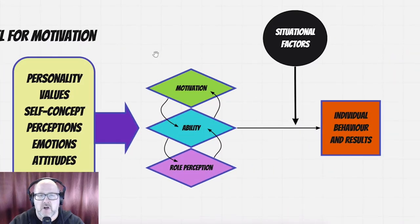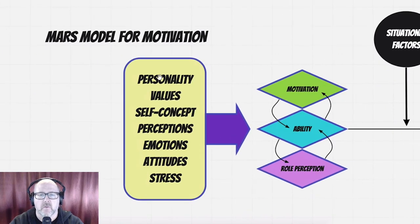The MARS model is all about motivation, ability, and role perception. On this side of the model, we see personalities, values, self-concepts, and perceptions that people have about themselves in different categories and areas of their work. There's also perceptions, emotions, attitudes, and stress.